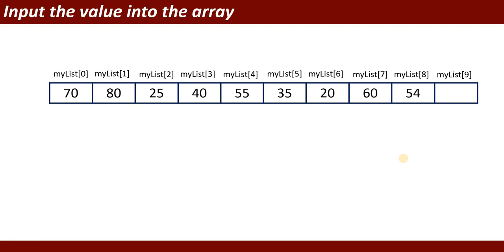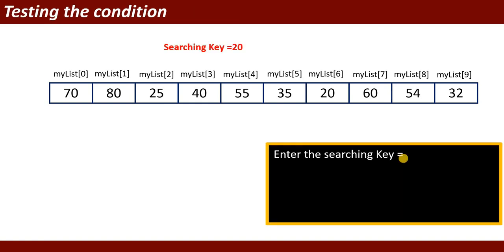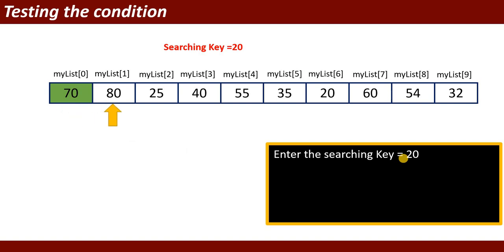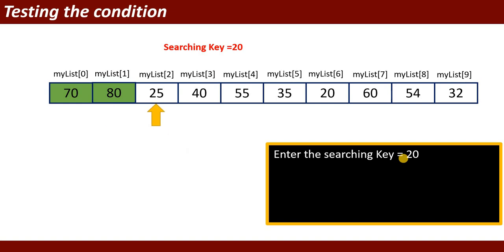...and 60, 54, and 32 — there are 10 elements in the list. You are asked to enter a searching key; suppose the searching key is 20. It will check whether 70 is equal to 20 — that is not equal. Then it will check the next element: 80 equal to 20 — that is also not equal.